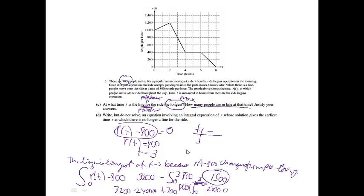So that part was worth three points. We got one point for finding t equals 3. If we identified that t equals 3 was the time at which the line was the longest, we get a point. We got one point for finding the 1,500. And then we got one point for justifying, saying something about the r of t minus 800 changing from positive to negative. I ran out of room here, so I'm going to go up top here for part D.